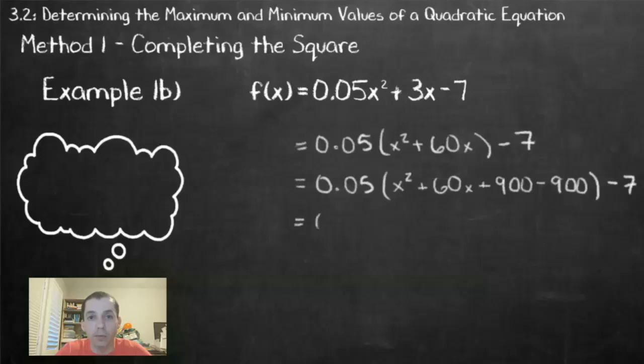In our next step, we move that negative 900 out of the brackets. Again, to do that, we multiply by our coefficient, 0.05. When we do that, we end up with a value of negative 45, which will go outside of the brackets.